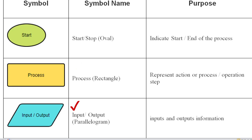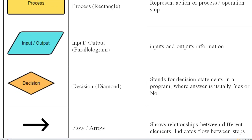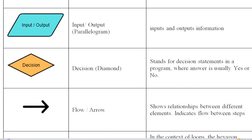Then another symbol is Input or Output, which is a parallelogram. If you need to display input or output, you use these parallelogram shapes to represent input and output information. Then another important symbol is the Decision symbol, or diamond-shaped symbol. This symbol is used to check a condition.